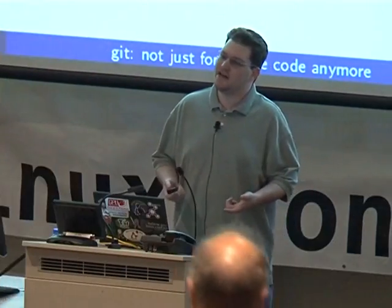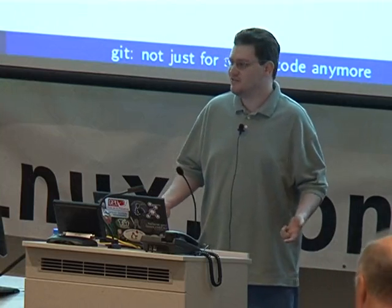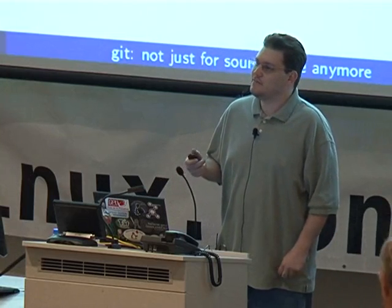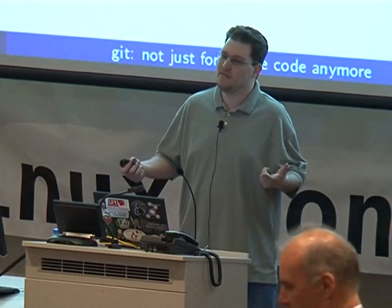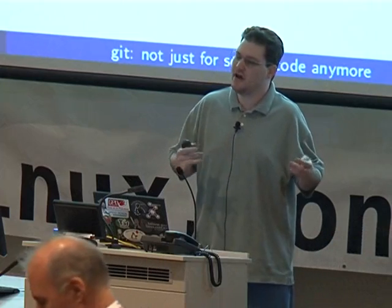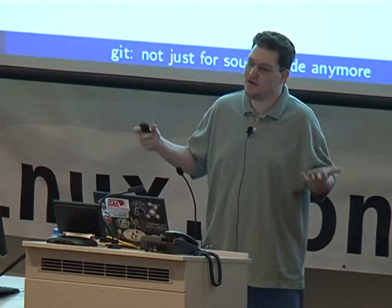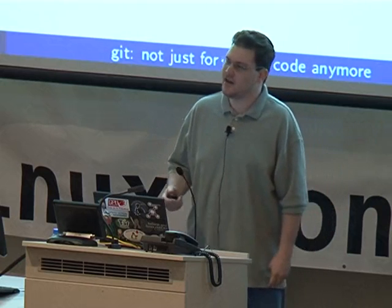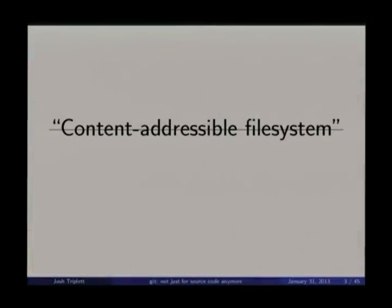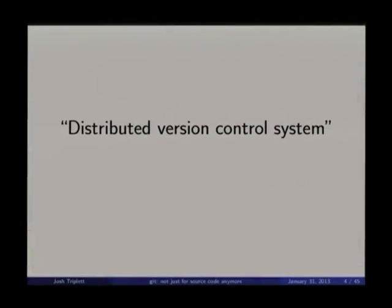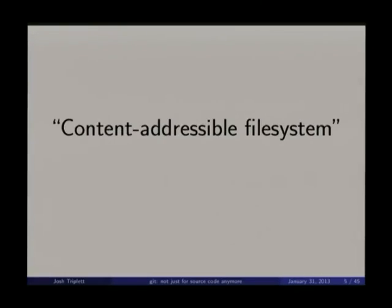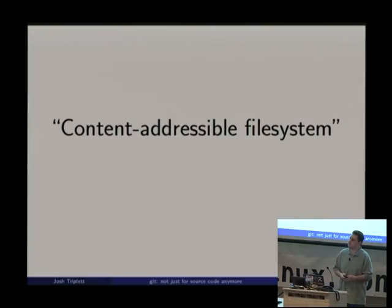When Git was first created, it was often described as a content-addressable file system. The problem with that is nobody really knew what that meant. So when you were trying to pitch it as a version control system but it officially described itself as a content-addressable file system, all the people who are good at marketing said, let's throw that name away and call it a distributed version control system — that we can actually sell to people.